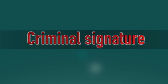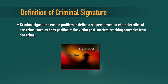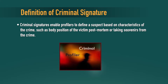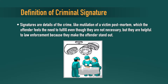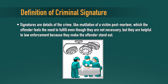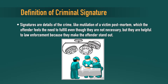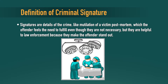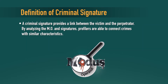Let us discuss the criminal signature. What do we mean by criminal signature? Criminal signatures enable profilers to define a suspect based on the characteristics of the crime, such as the body position of the victim post-mortem or taking other souvenirs from the crime. Signatures are details of the crime like the mutilation of victims post-mortem, where offenders feel the need for fulfilling even if it is not necessary. They are helpful to law enforcement agencies because they make offenders stand out from the scene. A criminal signature provides the link between the victim and the perpetrator.